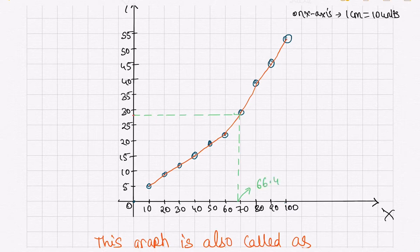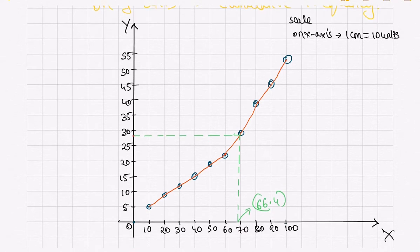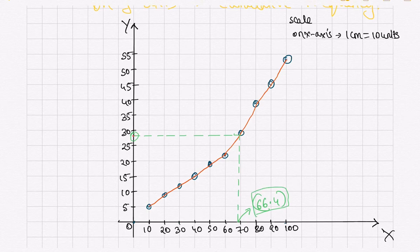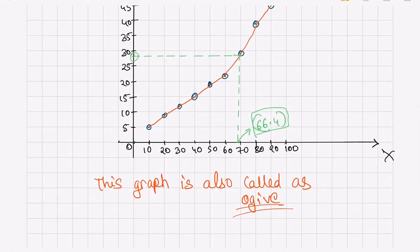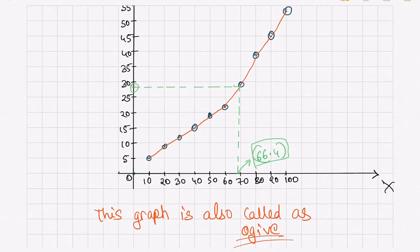Thus the value you will receive is 66.4 as the median, which we had already calculated earlier. Since I have drawn this graph roughly here, the value is not coming exactly at 66.4, but if you draw it on proper graph paper you will get exactly 66.4. So finally we have seen how to draw an ogive and how to calculate the median from the graph.